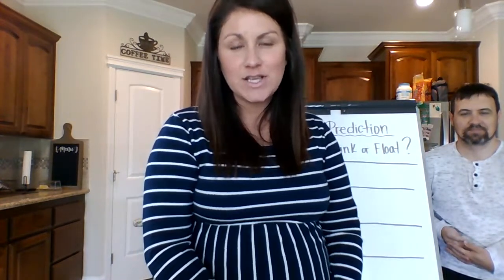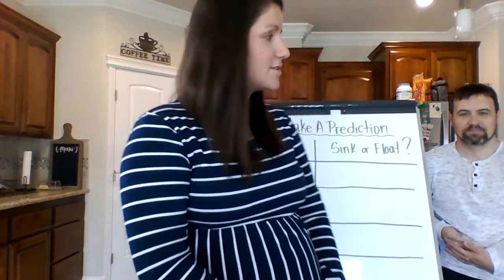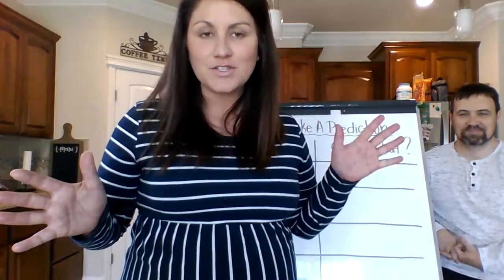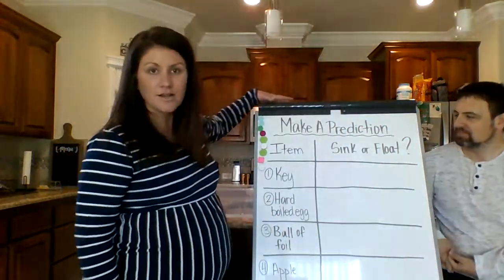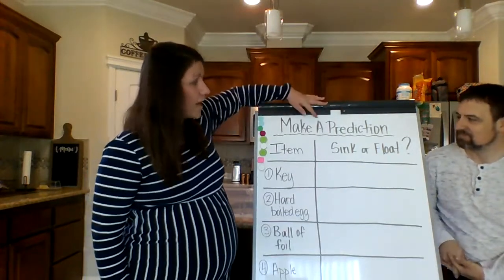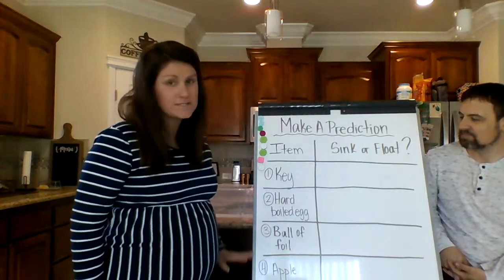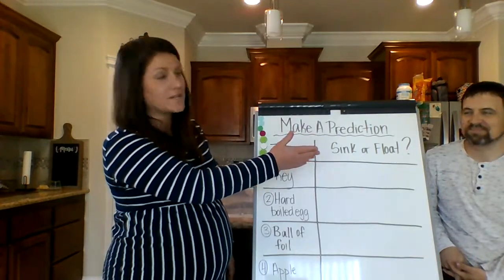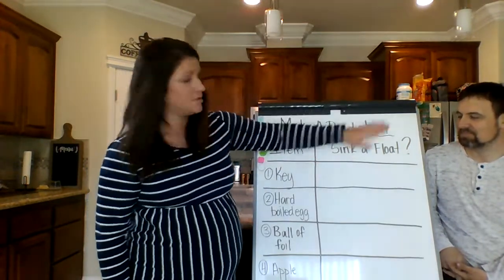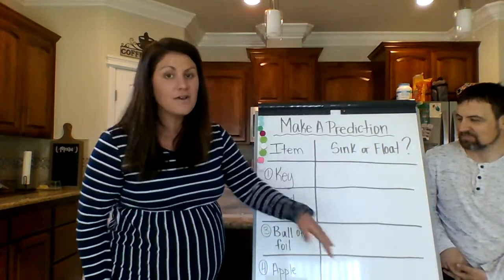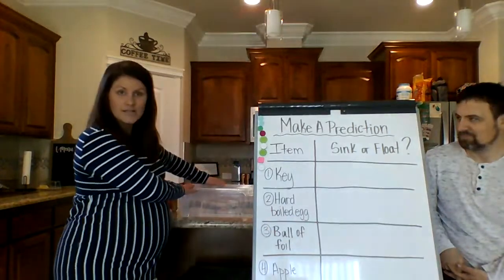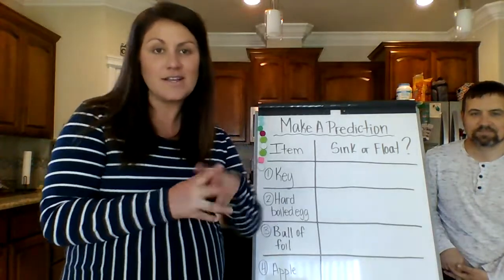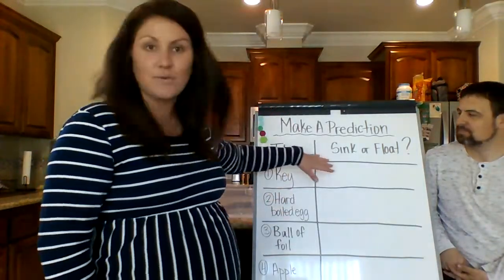We're going to be making predictions about which items we think are going to sink or float. I have Mr. Fisher here playing my student. He's going to be an example of what you guys are going to do at home. I have a little table here — make a prediction — and I've already chosen six items that we're going to use for this example. If you do this at home, it'd be a fun competition between family members to see who predicts the correct answer.